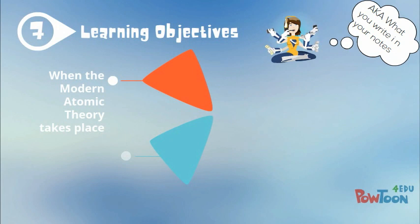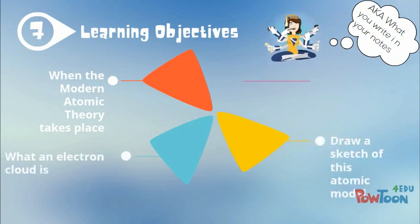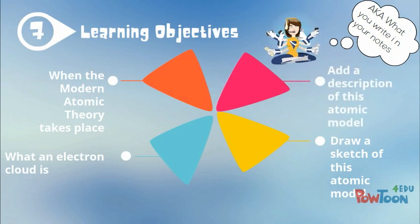Did you get answers to the learning objectives in your notes? What's the time period for the atomic model? What is an electron cloud? Did you draw a picture or sketch of the atomic model, and did you add a description of the atomic model?